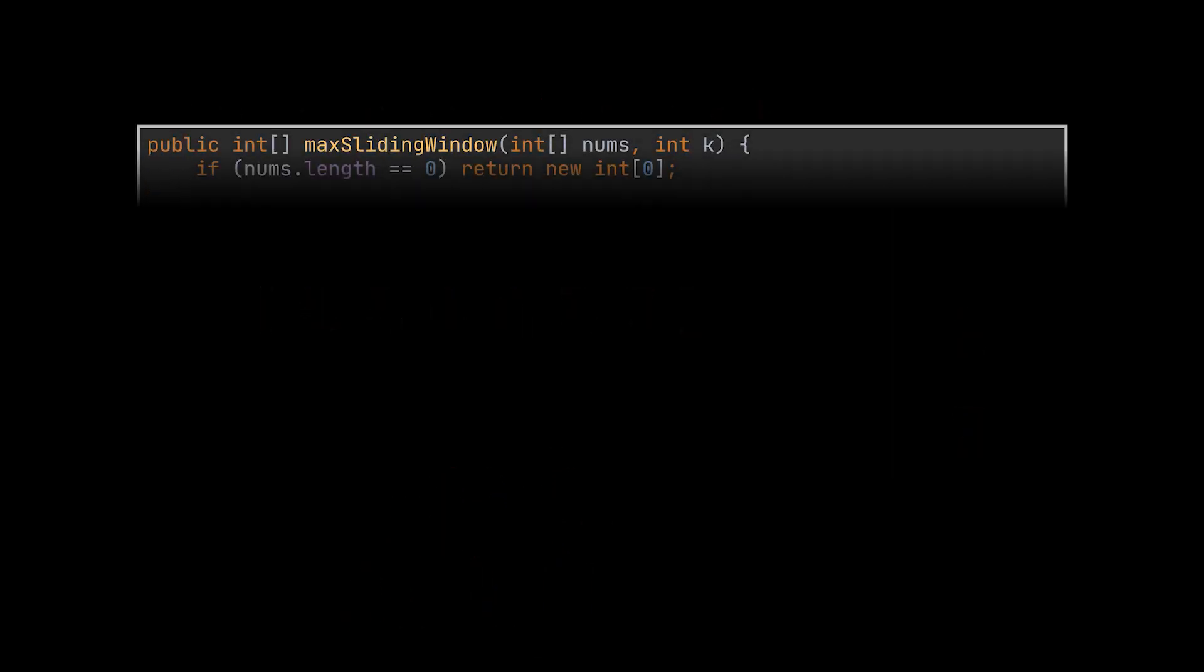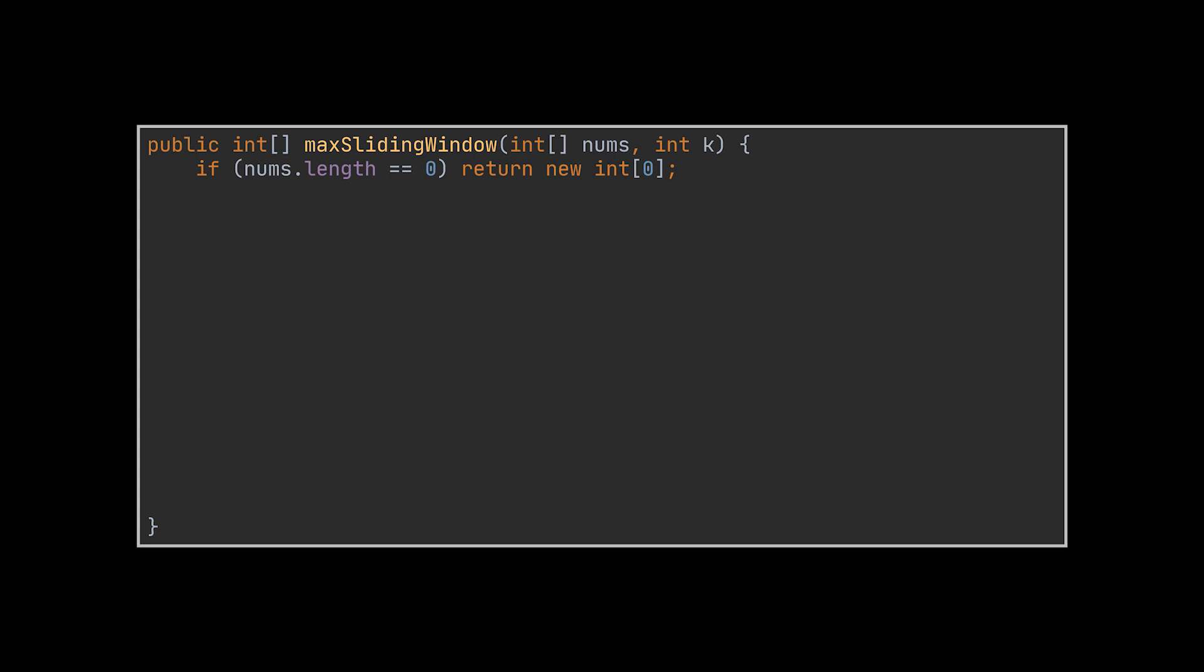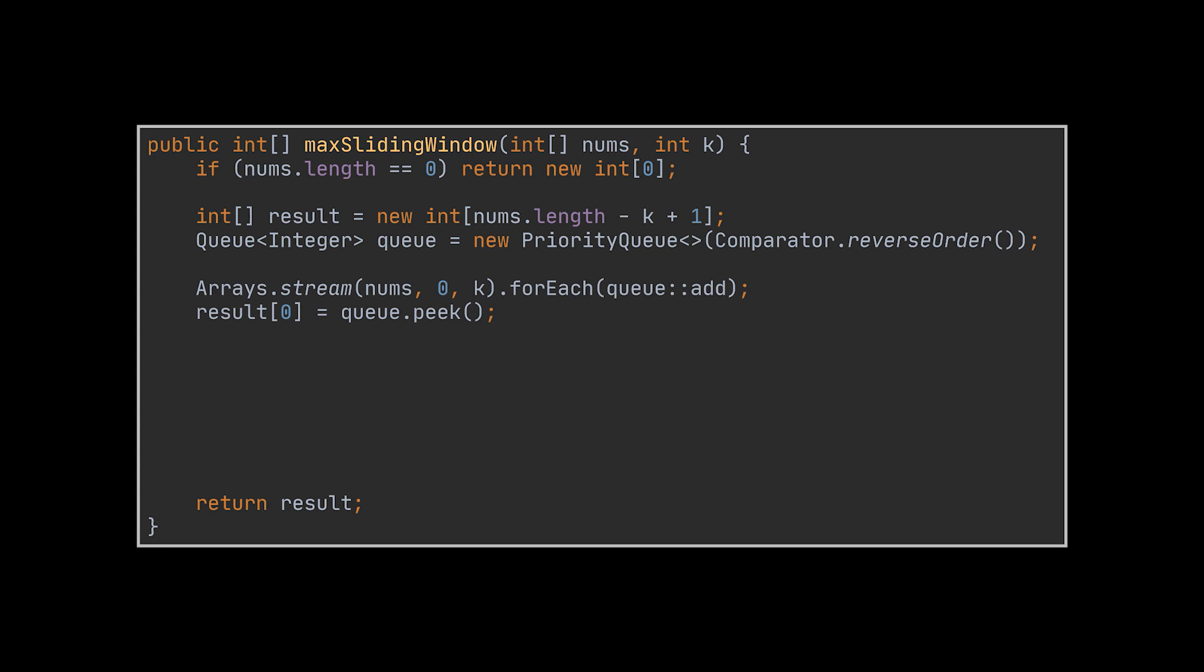Before ending the video, I would like to mention an additional solution, as it is very intuitive, but not as optimal as this last one. Since we are retrieving the maximum among a defined set of elements, max heaps may come to mind. If instead of a double-ended queue, we had a maximum heap, and we started off with the first k elements and the first window maximum,